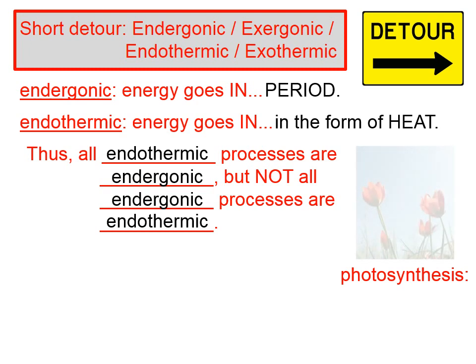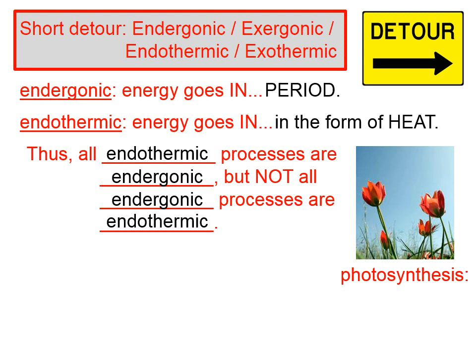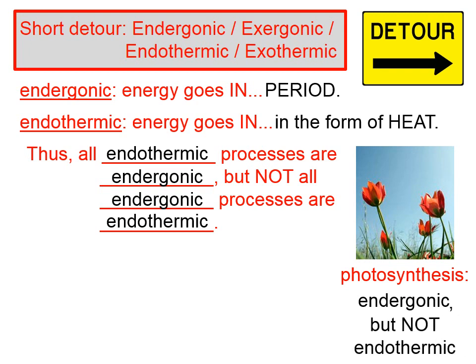Let's give a couple of examples. How about photosynthesis? Is energy put in, in order for photosynthesis to happen? The answer is yes, so this is definitely an endergonic process. Is the energy that's put in in the form of heat in photosynthesis? No — the energy that's put in is in the form of light. Photosynthesis is an endergonic process, but it's not endothermic.